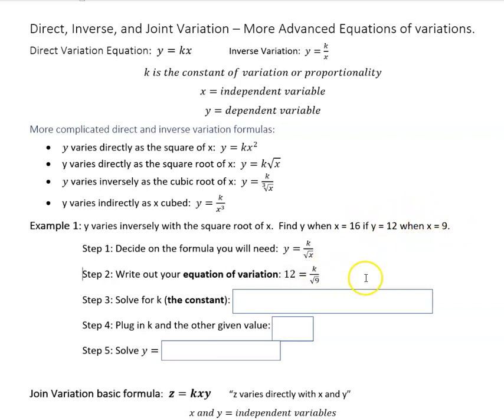We're looking for y when x equals 16. So that's not what we're plugging in. We're plugging in these two. We know y when x is 9. So we're going to come to this equation and say y is 12 when x is 9. And then you have to solve for k, because now you have everything except the k there.